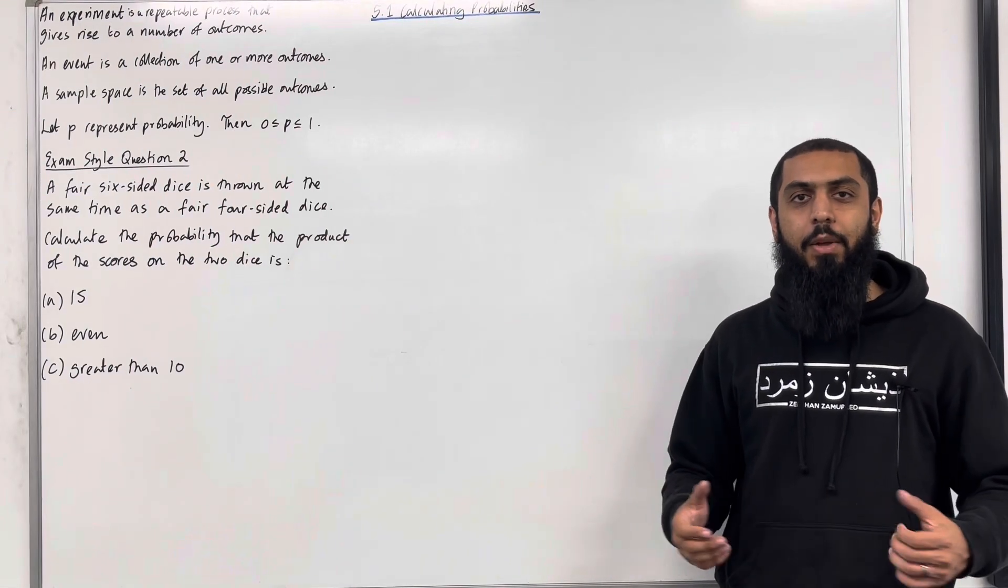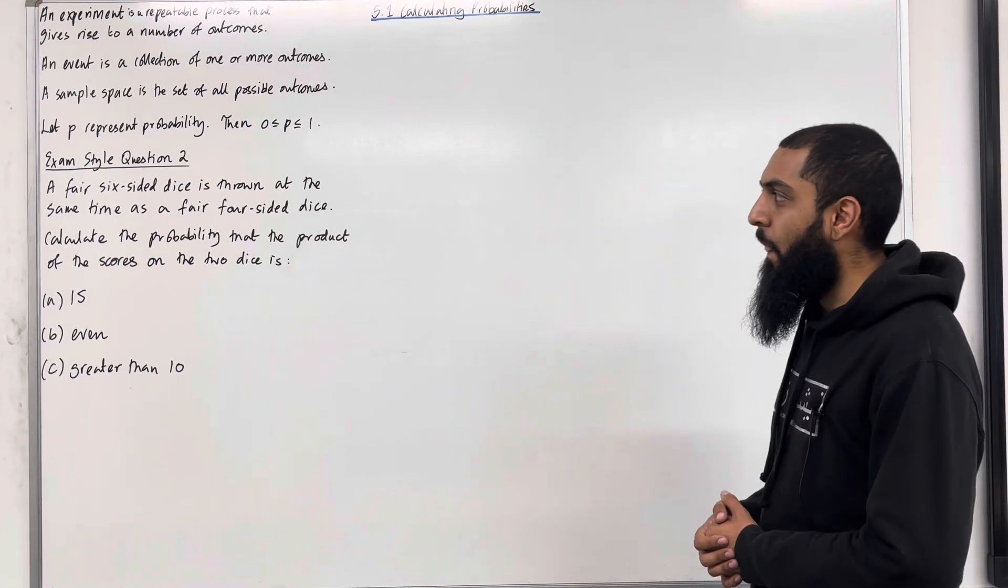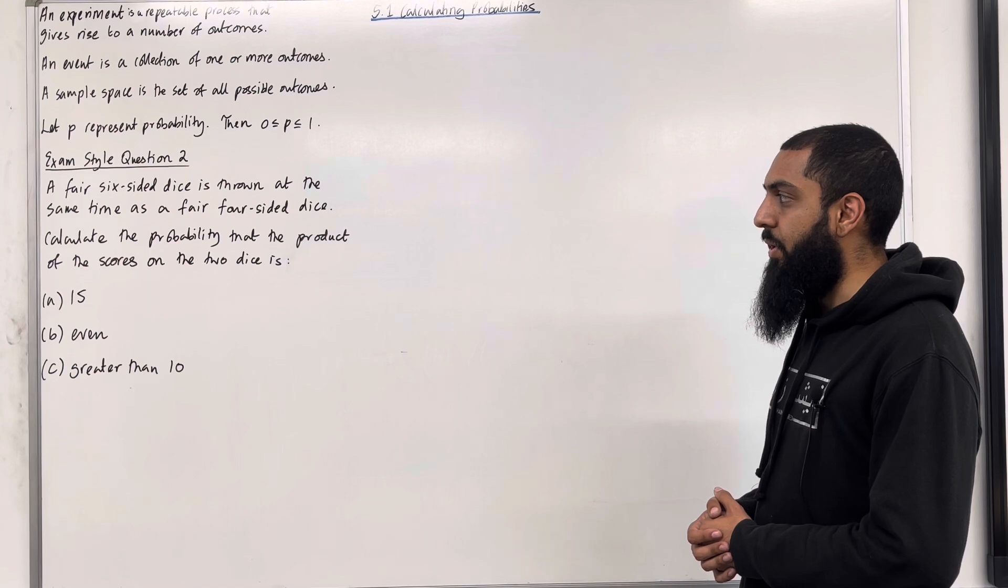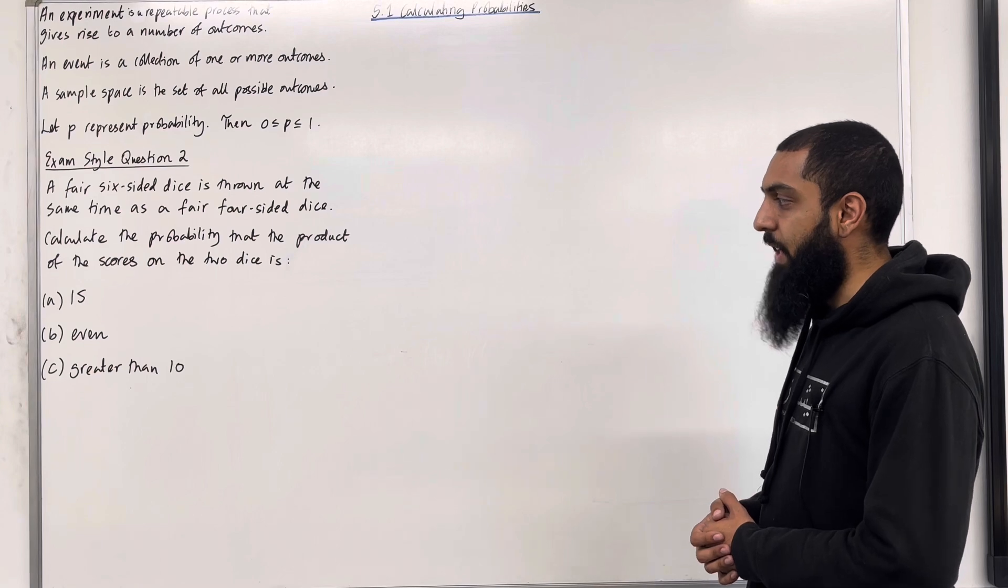Moving on to exam style question 2. A fair six-sided dice is thrown at the same time as a fair four-sided dice. Calculate the probability that the product of the scores on the two dice is part A, 15, part B, even, and part C, greater than 10.